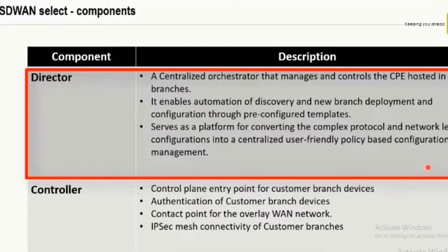Why do we call it pre-configured templates? A template is nothing but a list of configurations. When bringing up a Cisco router, you configure the interface IP address and so forth. All these things are automated so you just click a button. You need not even log into the CLI of the box to make any change — it automates everything, and you just have to discover the box to the Director.